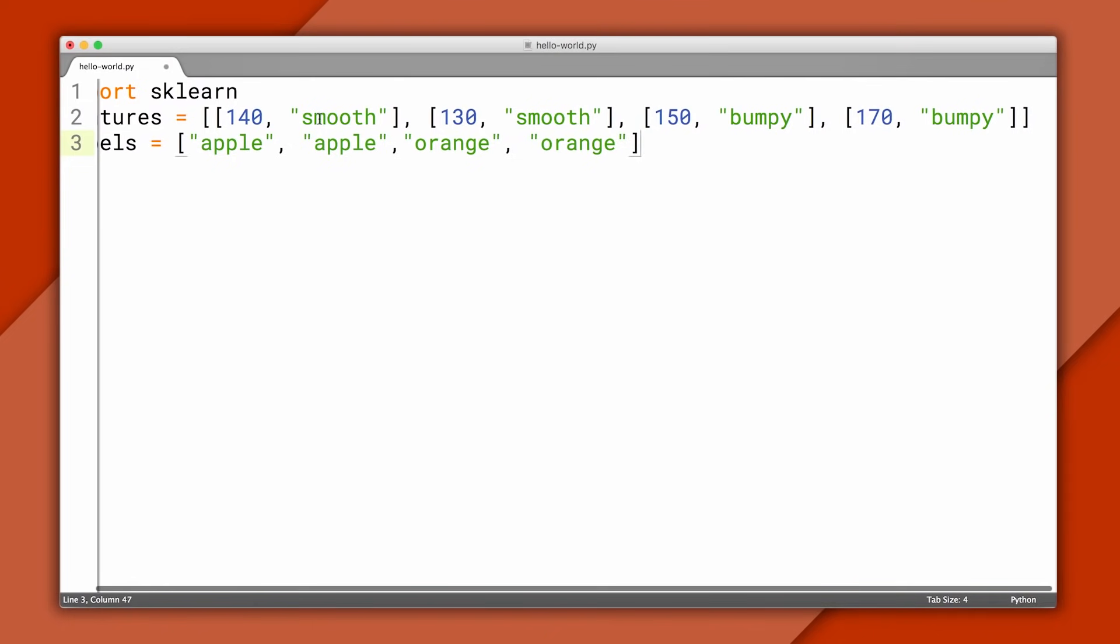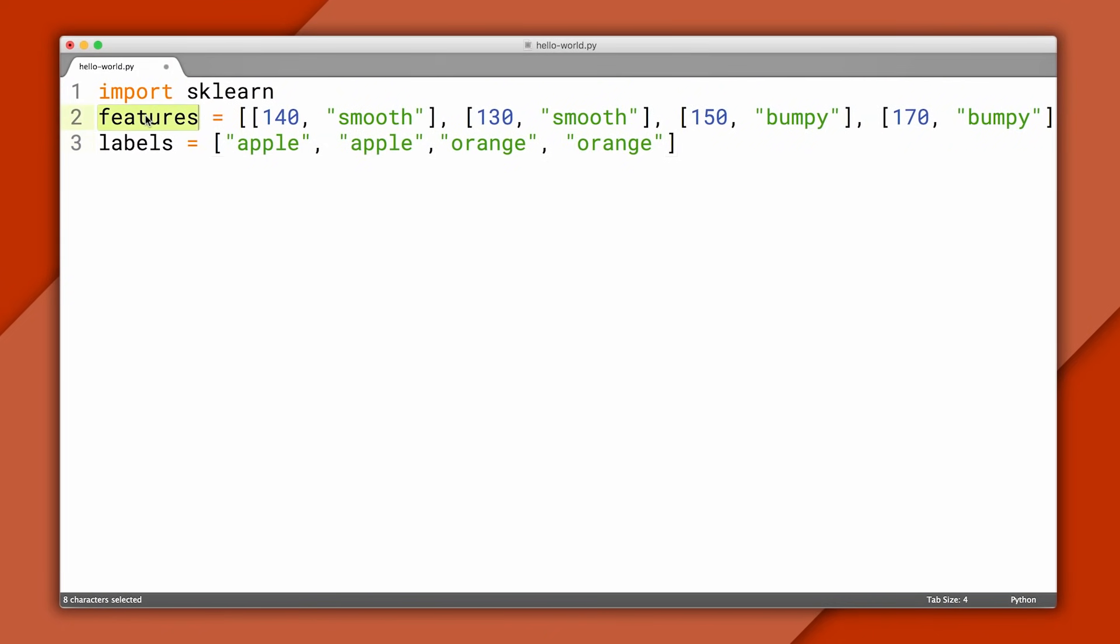Now let's write down our training data in code. We'll use two variables, features and labels. Features contains the first two columns, and labels contains the last. You can think of features as the input to the classifier, and labels as the output we want.